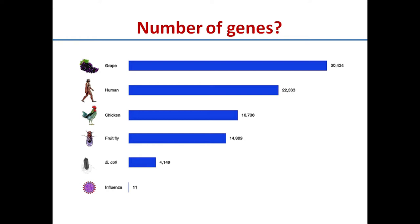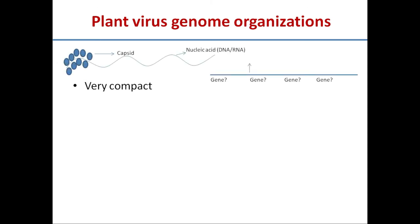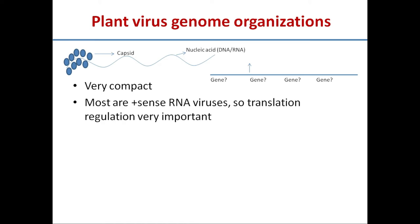When we say plant virus genome organization, we refer to the genome which is mostly single-stranded RNA. In that single-stranded RNA molecule, what genes are present, how they are arranged, and what their functions are. Plant viruses, which are self-replicable nucleoprotein molecules, have a very compact genome, so the number of genes is less and there are no unnecessary genomic elements.